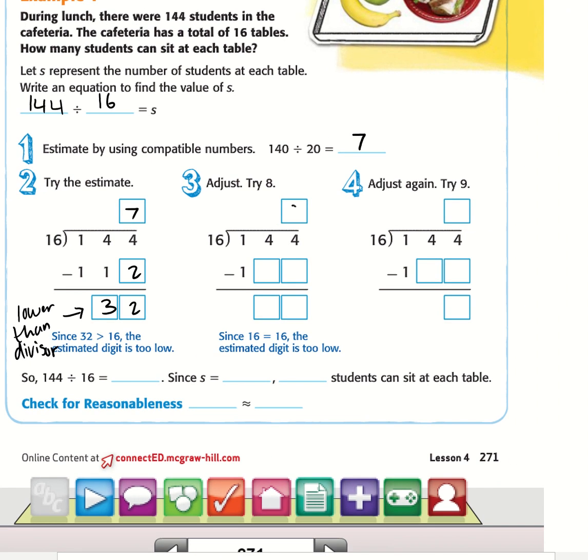Instead of 7, now we're going to try 8. 8 times 16 is going to be 48, 128. We're going to borrow, it's going to be 6, 1. 16 is still not lower than the quotient, so we're going to adjust again.